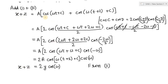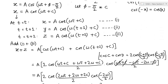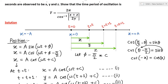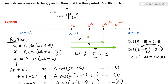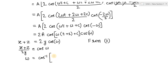Our very difficult-looking expression has been simplified and we are very close to the answer. Dividing both sides by 2y, we get (x plus z) divided by 2y equals cos(ω). Therefore, ω equals cos inverse of (x plus z) divided by 2y.